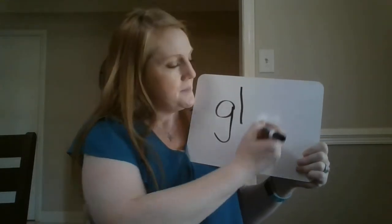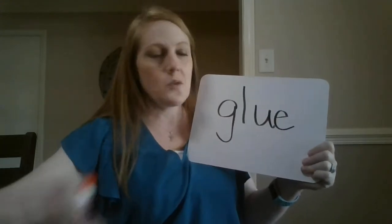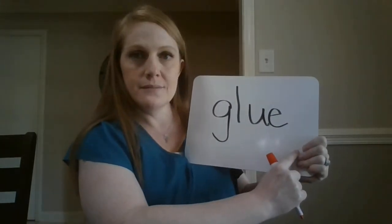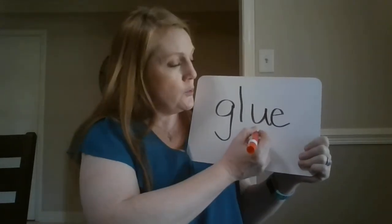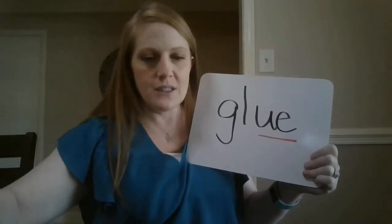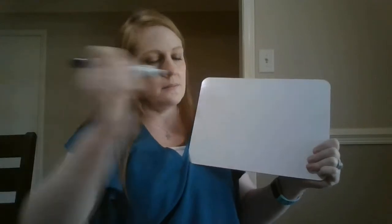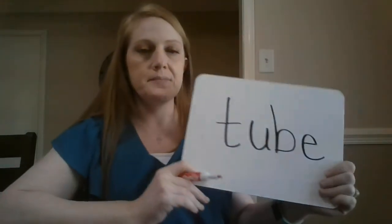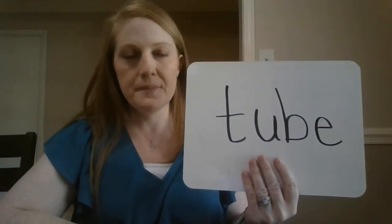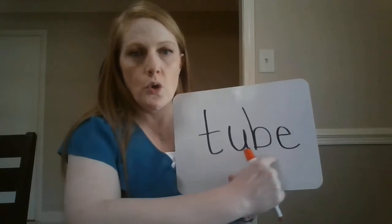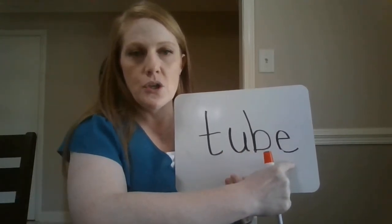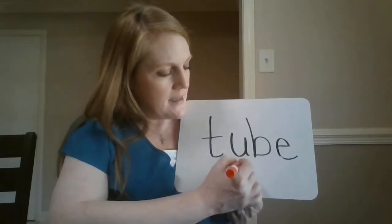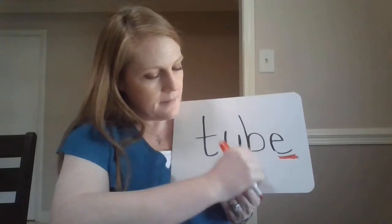Say the sounds as you see me write them. Let's blend this word. GL-OO. What is this word? Glue. And the OO spelling in glue is U-E. Very good. What's our OO spelling in this word? U blank E. What letter goes in the blank for tube? The B. Very good.